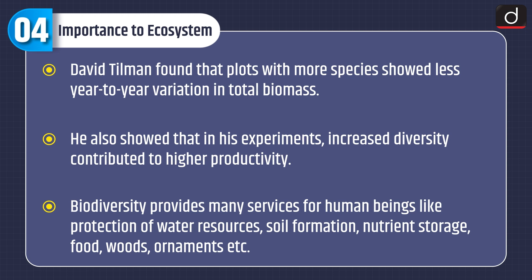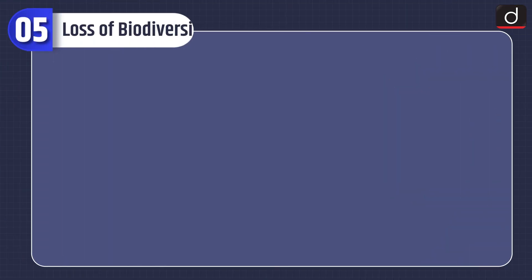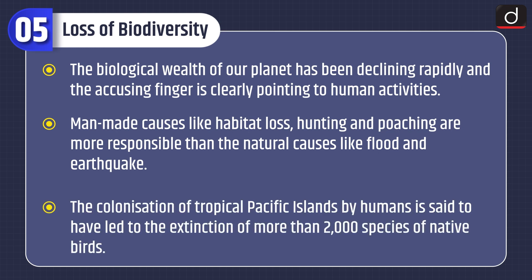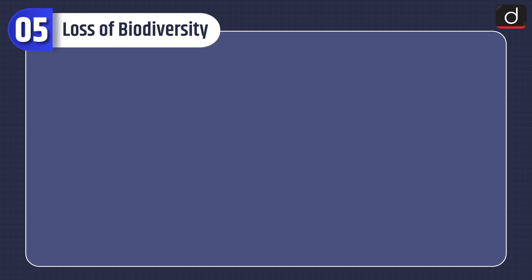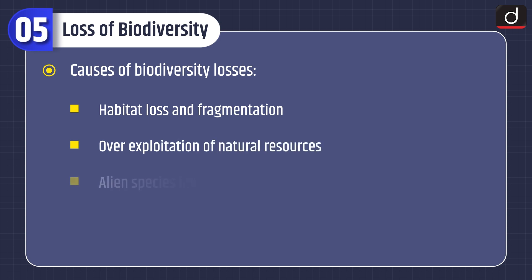Biodiversity provides many services for human beings like protection of water resources, soil formation, nutrient storage, food, wood, ornaments, etc. The biological wealth of our planet has been declining rapidly, with human activities clearly to blame. Man-made causes like habitat loss, hunting, and poaching are more responsible than natural causes like floods and earthquakes. Colonization of tropical Pacific islands led to the extinction of more than 2,000 native bird species. The IUCN Red List 2004 documents the extinction of 784 species — including 338 vertebrates, 359 invertebrates, and 87 plants — in the last 500 years, with 27 species disappearing in the last 20 years alone. Causes include habitat loss and fragmentation, over-exploitation, alien species invasions, and co-extinctions.